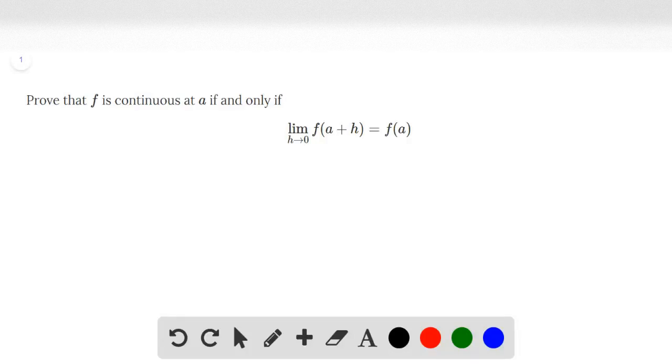This is problem number 63 of the Stewart Calculus 8th edition, section 2.5. Prove that f is continuous at a if and only if the limit as h approaches 0 of f(a + h) equals f(a).